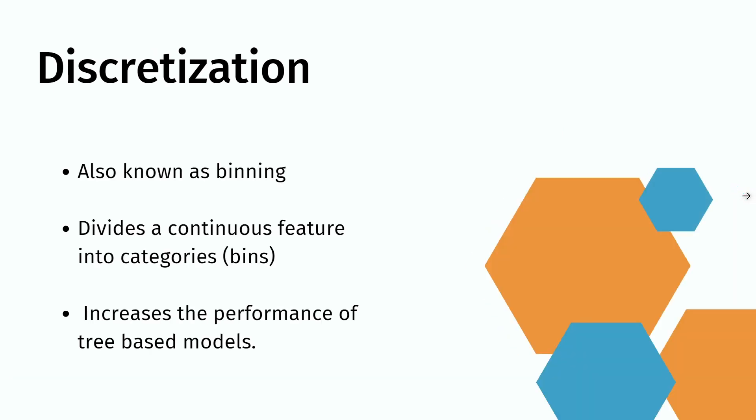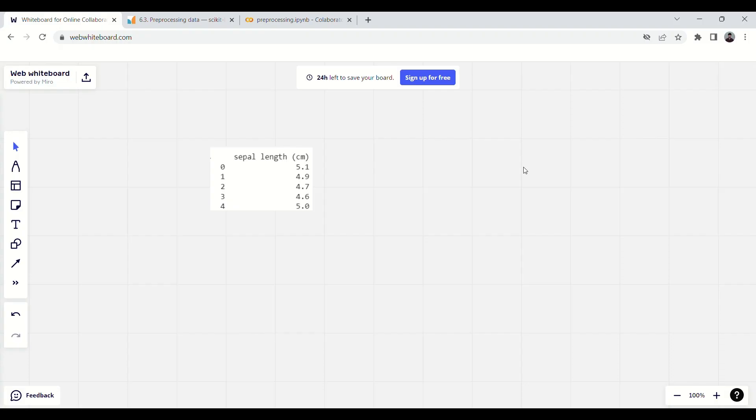Discretization is also known as binning, where you divide a continuous feature into separate categories or bins. This helps increase the performance of tree-based models. Let's look at an example of what discretization is.